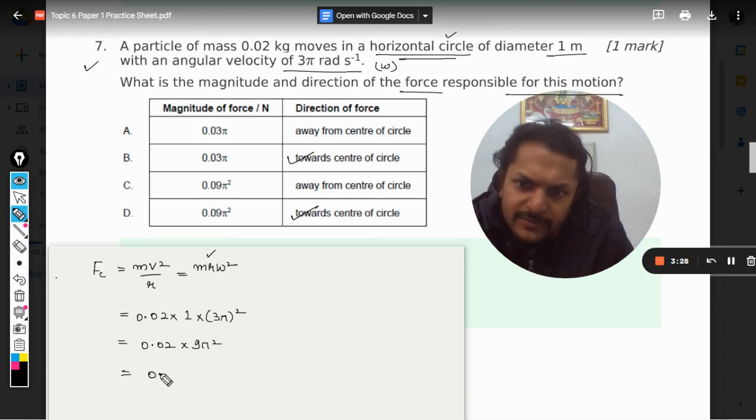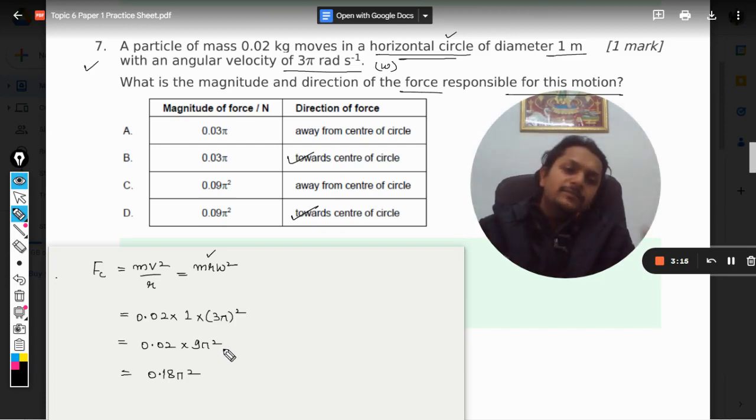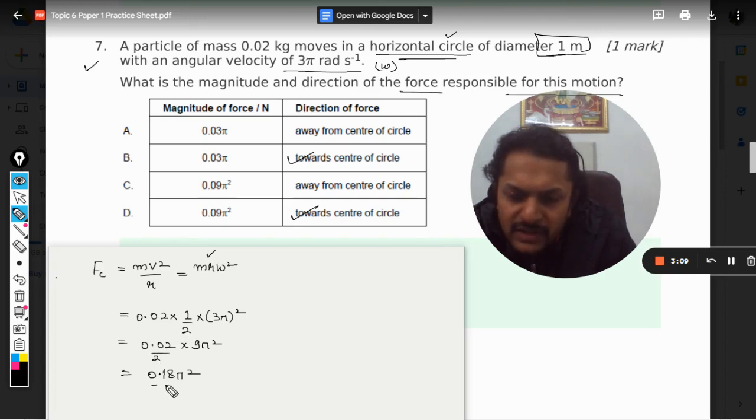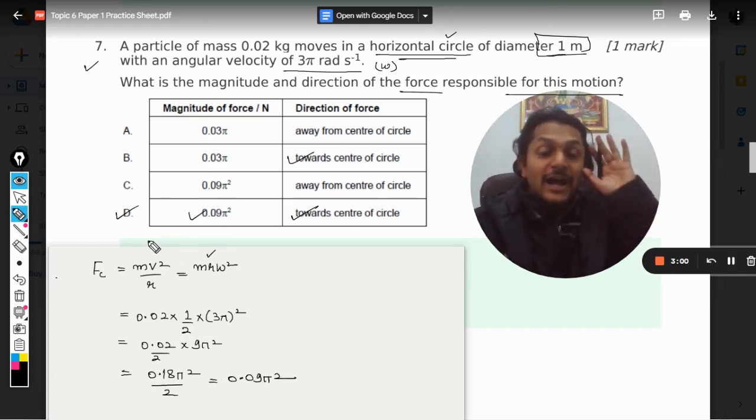2 by 100, 0.18 pi square... have you made a mistake here somewhere? Okay, sorry I made a mistake here. The diameter is 1 meter so we need radius, so we need to divide it by 2. So it will be 0.09 pi square. So my dear students, D is the correct answer. I'm really sorry for that thing.